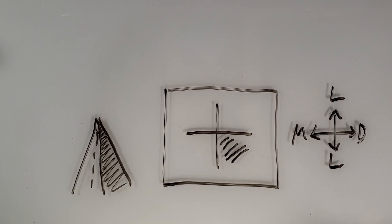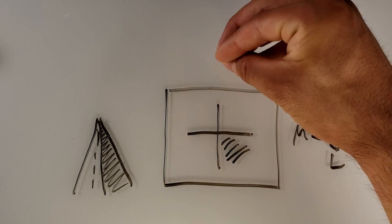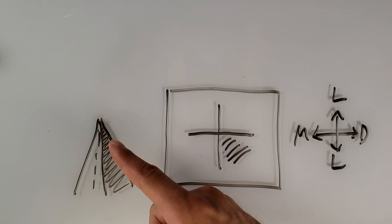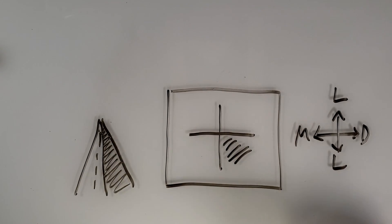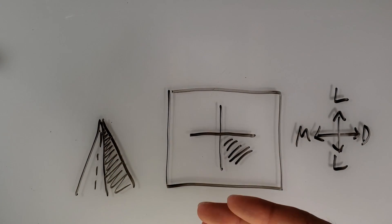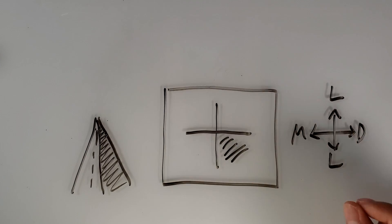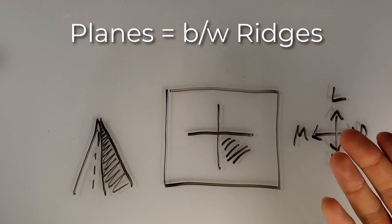Now, in between is going to be a plane. If we think of this as a 3D structure, we pull it out, it's going to have a point, and I shaded in one of the sides. This side, we're still going to refer to with the directional terms, and we're going to use two directional terms, because we're shading in between the ridges.